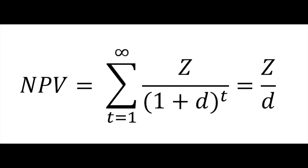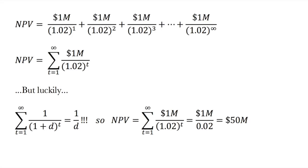We can use this to write the general equation: NPV equals the sum from t equals 1 to infinity of z over (1 plus d) raised to the t, which is just z over d, where z is the value of the annual cost or benefit. So if z is a million and d is 0.02, then NPV is 50 million. So if the seawall costs less than 50 million, we'll build it; if it costs more, we won't.